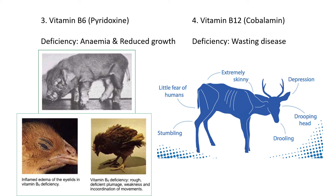Vitamin B12 causes wasting disease — basically like muscular dystrophy. Wasting disease means the animal has less muscle mass, looks extremely skinny, you can see their bones and ribcage. The picture of a deer shows symptoms including a drooping head and drooling — they struggle to use their bottom jaw, so the jaw relaxes too much and they start to drool. They also stumble around, and in many cases wild animals feel so sick they show no fear of humans and can't run away.